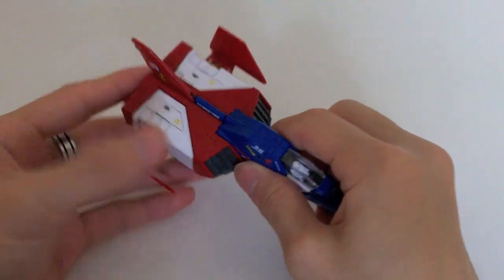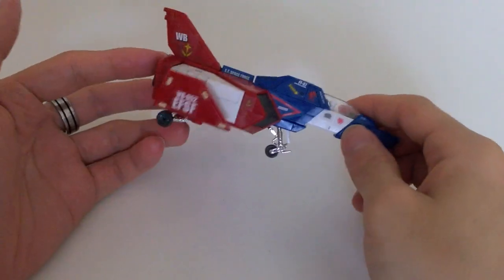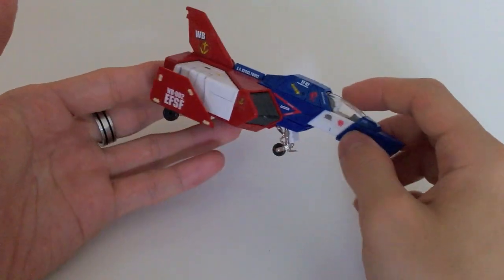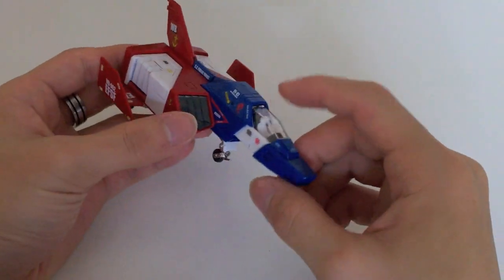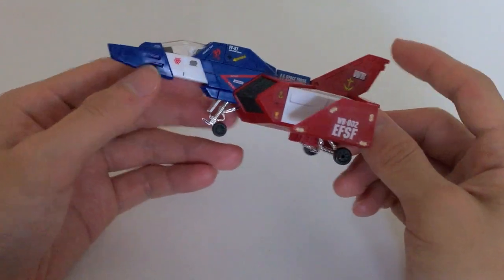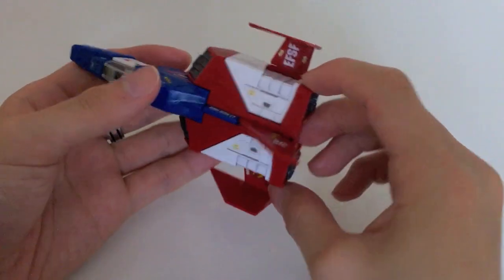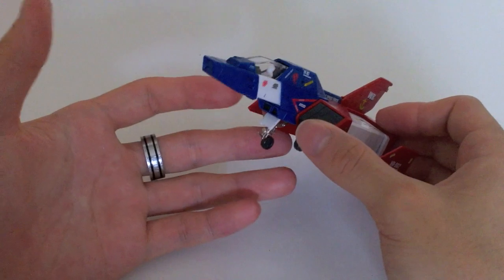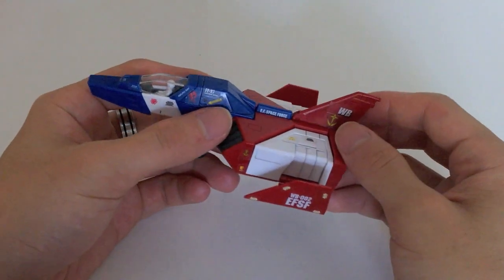And last but certainly not least, and easily my favorite accessory is the core fighter complete with chrome landing gear. You can see that this is probably the only area of the entire kit where Bandai may have gone a little overboard with the decal layout. But it certainly looks on par for perhaps a kit released today.